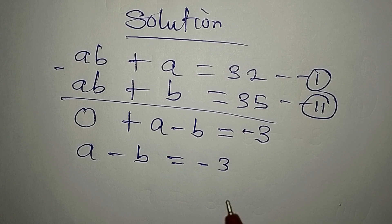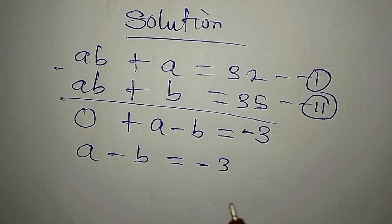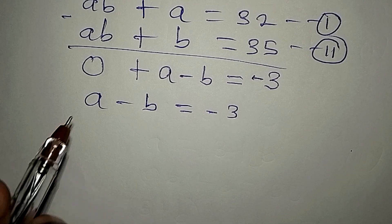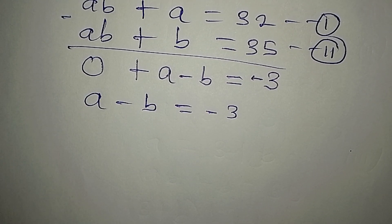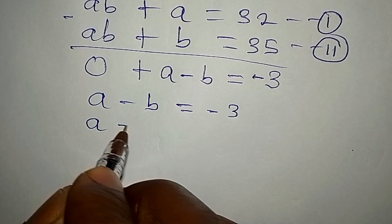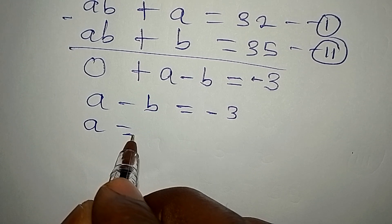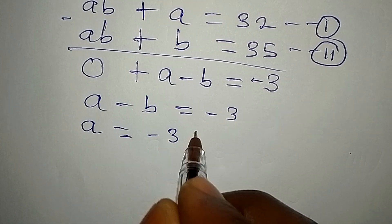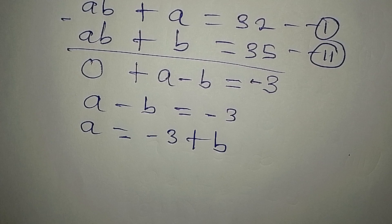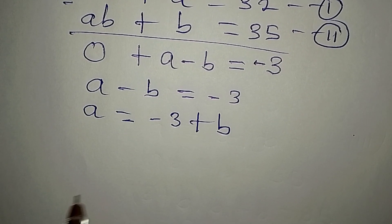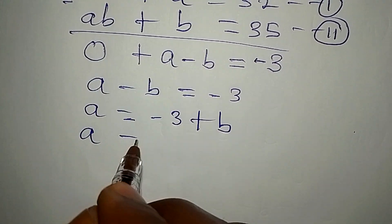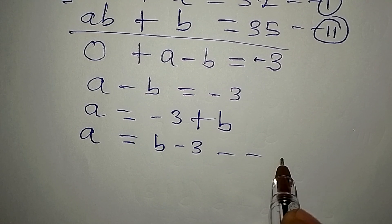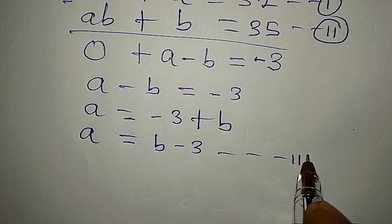From here we can make A the subject, so A will be equal to minus 3 plus B, which equally means that A equals B minus 3. This becomes our equation 3.